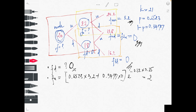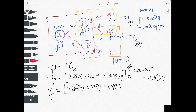Calculating f_u gives 2.0257. Then the original node f equals 0.6523 times 2.0257 plus 0.3477 times f_d (which is zero), discounted back to present. This gives f equals 1.2823. This completes the two-step binomial tree calculation for the call option.